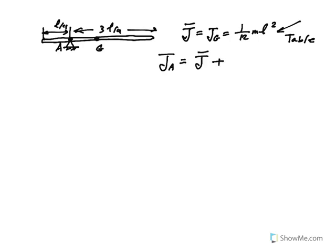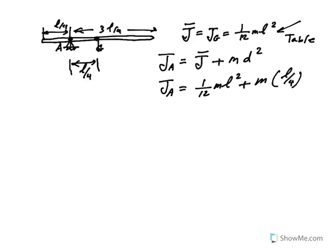Based on parallel axis theorem, J sub A becomes J bar plus md squared. Therefore, J bar is 1/12 ml squared. M is unknown in this problem. D is the distance between the center of gravity and the pivot point, which is L over 4. So if you squared L over 4, 1 fourth becomes 1/16. What is 1/12 plus 1/16? If you factor ml squared out, that becomes 7 over 48 ml squared.